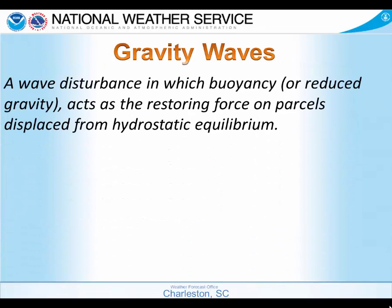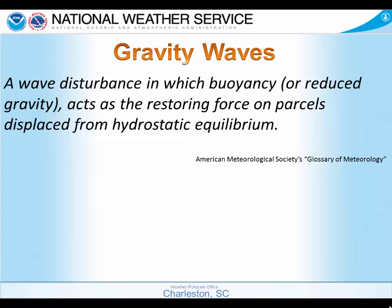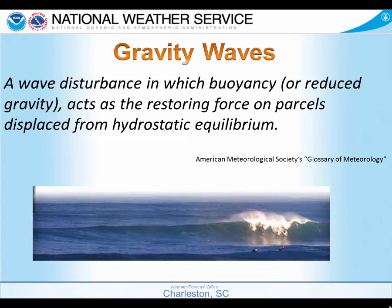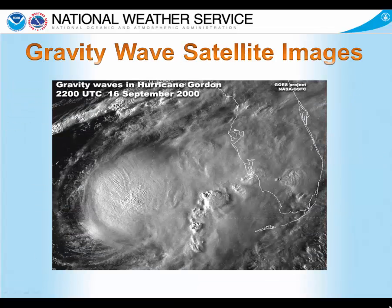Let's define gravity waves. They are wave disturbances in which buoyancy, or reduced gravity, acts as the restoring force on parcels displaced from hydrostatic equilibrium — that's right out of the Glossary of Meteorology from the American Meteorological Society. A fairly common example of a gravity wave is an ocean wave. Here are some examples of gravity waves as seen by weather satellite images.